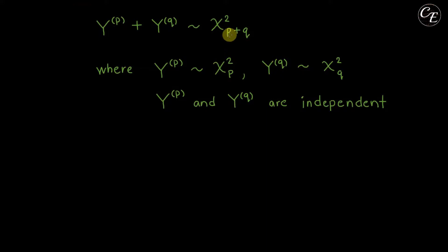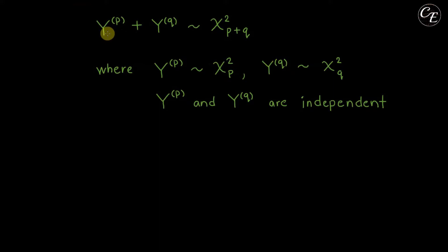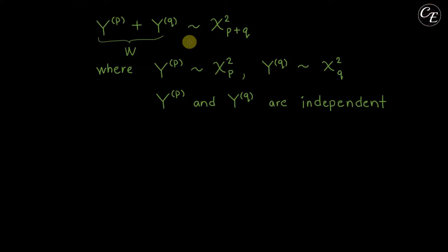So here we have p plus q equal to the degrees of freedom, which is p plus the degrees of freedom which is q. So now let us designate the sum of these two random variables by W. Then what we need to do is to prove that this W has this distribution.